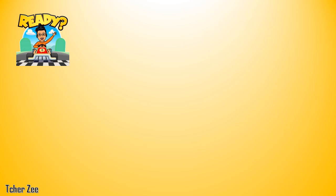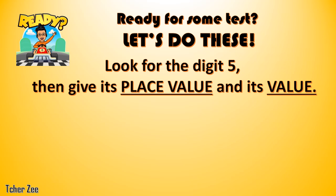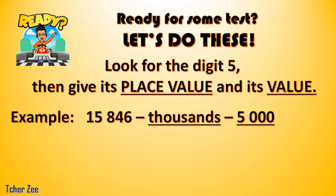Did you understand our lesson? Okay, let's check if you understood our lesson for today. Are you ready? Okay, let's do this. Now look for the digit 5, give its place value, and then its value. For example, our number is 15,846. Where is 5? The place value of 5 is thousands. What is the value of 5? You have 5 thousands — the value is 5,000. It's that simple.